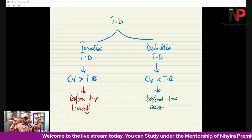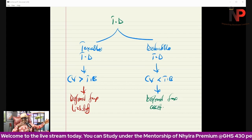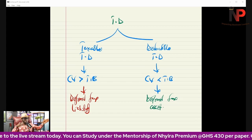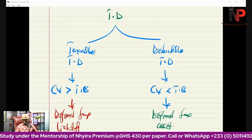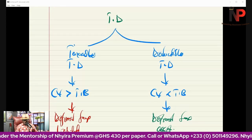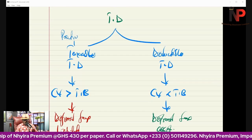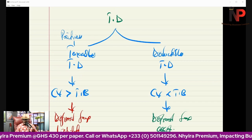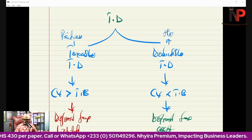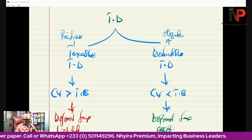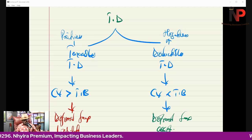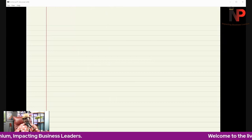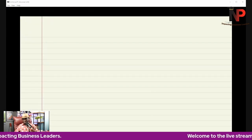So the temporary difference can be taxable or deductible. If it is taxable, it means a positive figure is coming in. If it is deductible, it's a negative figure. Let me give you an example to illustrate what this means in reality.